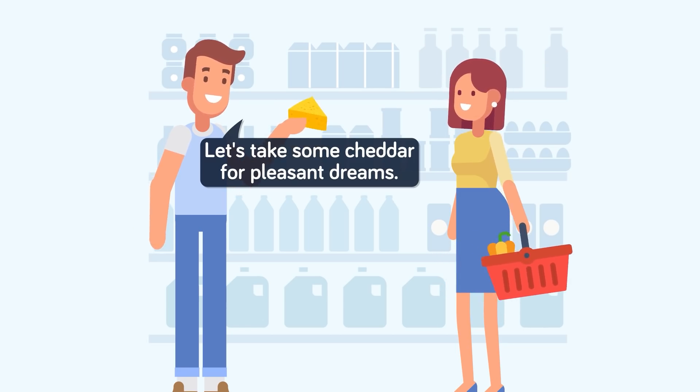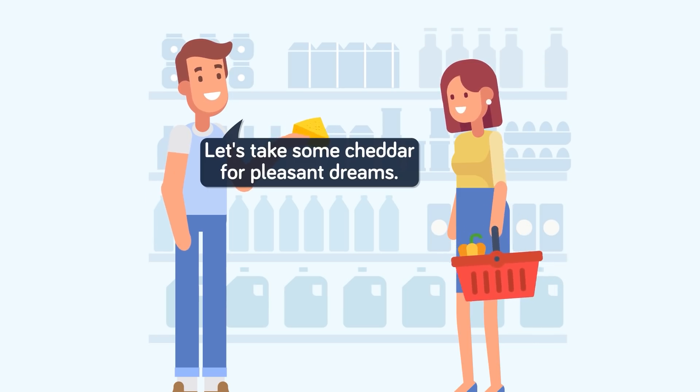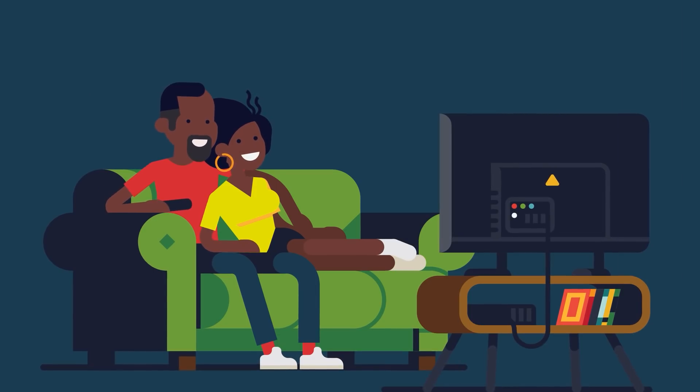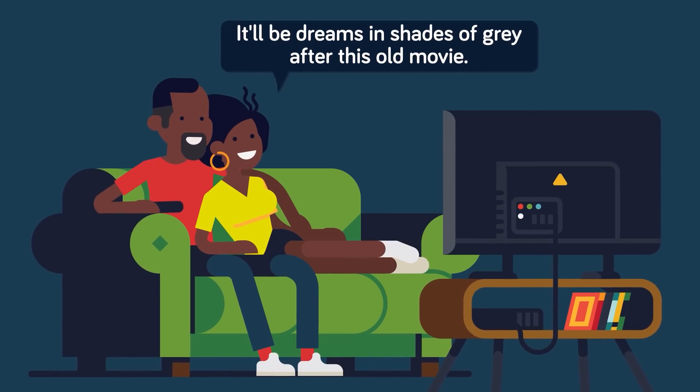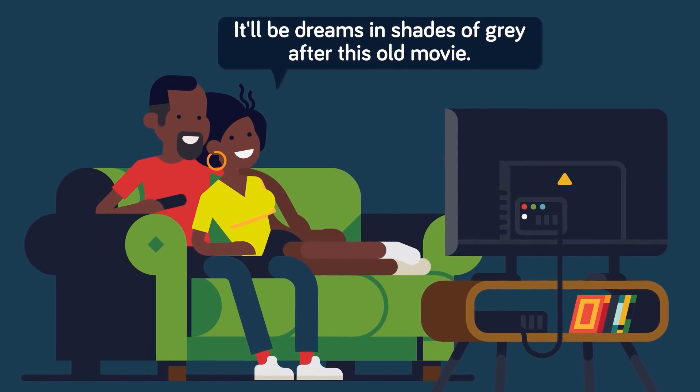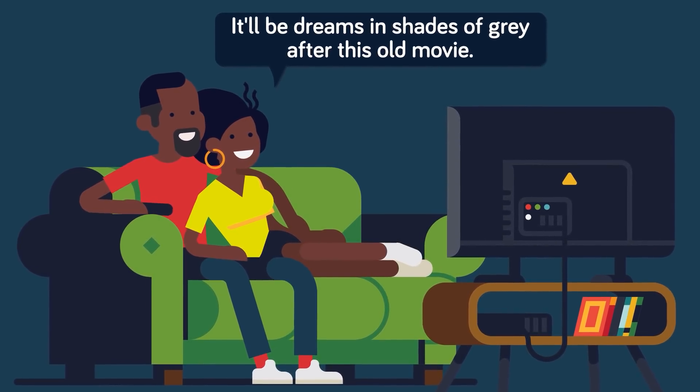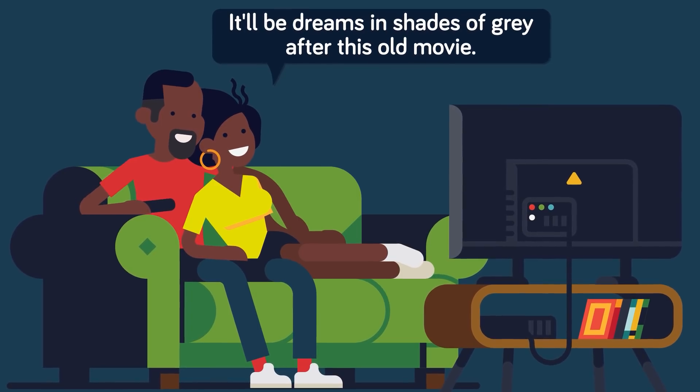Your choice of media before bed can have an impact, with scary movies creating nightmares. No shocker there. But if you want to see some strange effects on your dreams, there are surprising ways. Those who watch black and white movies or TV before bed have reported experiencing their dreams in shades of grey as well, showing just how susceptible our subconscious is to visual influence.